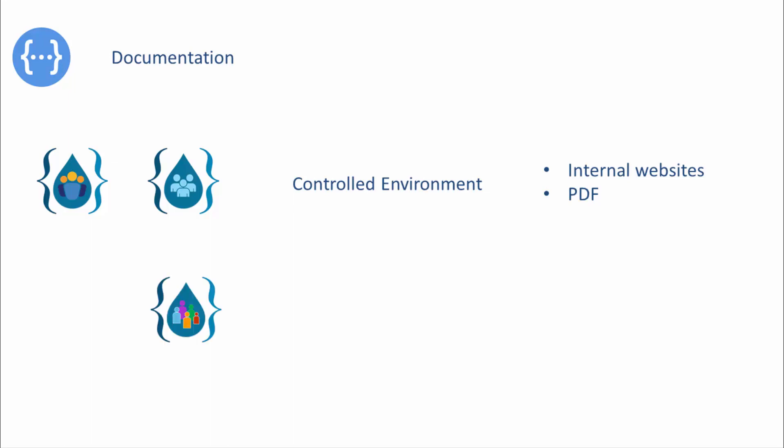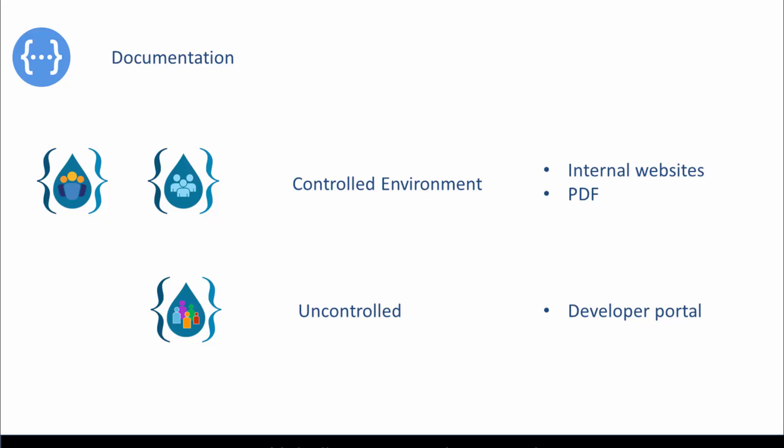In the case of a public API, we're talking about an uncontrolled environment where you don't know who the consumers are. In that scenario, it is suggested that API documentation be published via a website or portal referred to as the developer portal. My suggestion is that irrespective of the type of API, you should publish all your APIs on a developer portal. We will cover the developer portal in detail in the section on API management.